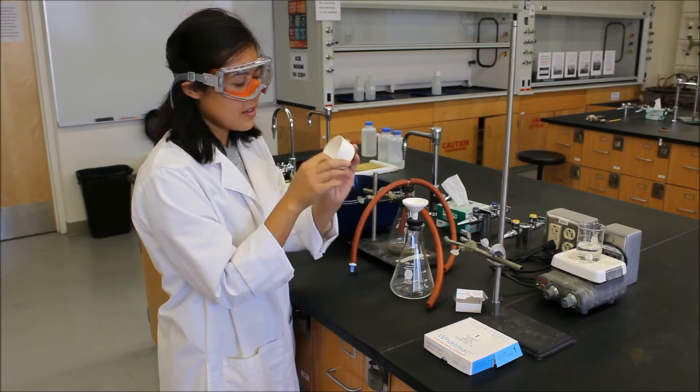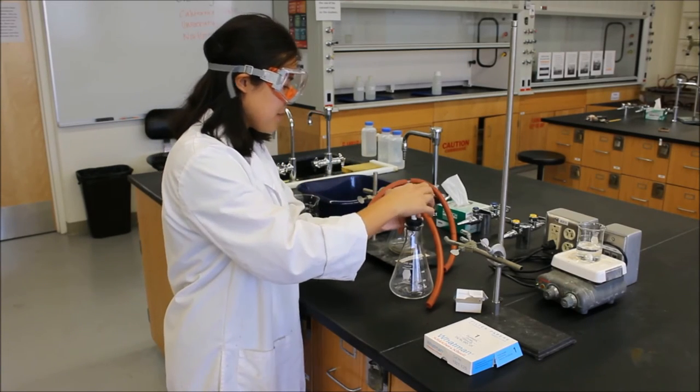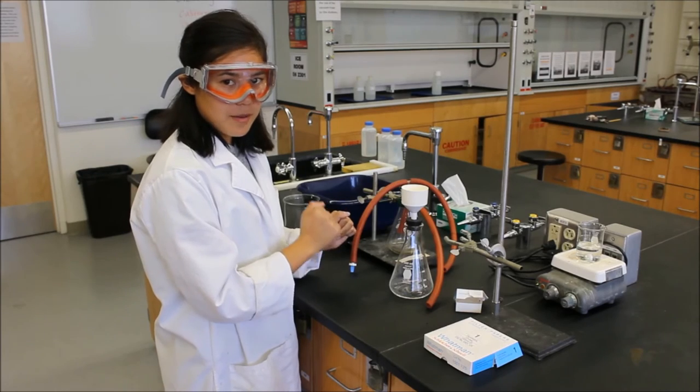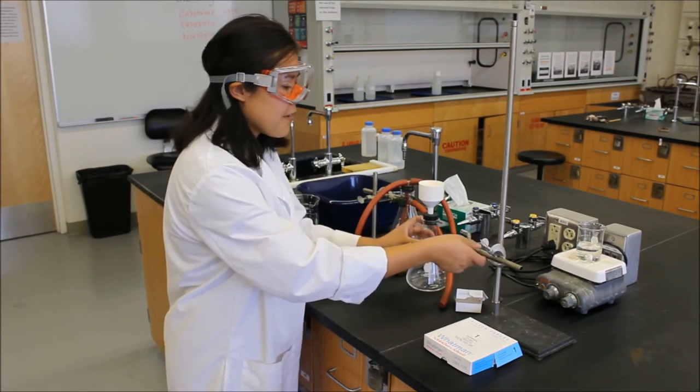You don't have to fold it or anything, just set it right inside, put it back on, and that's ready to go. So to set up the vacuum trap, there are a few things you need to do. First, I recommend that you get a clamp so that you can hold this flask down.